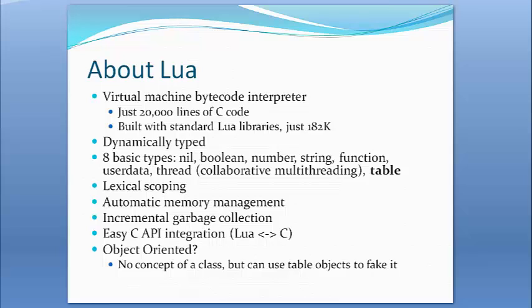Lua is a virtual machine bytecode interpreter with just 20,000 lines of code, and when built with the Lua standard libraries it compiles to a footprint of just 182K — very small. Lua is dynamically typed, as most scripting languages are, with eight basic types including a thread type for supporting collaborative multi-threading. It also features lexical scoping, automatic memory management, incremental garbage collection, and a very simple C API that makes it easy to call Lua from within C and to call C programs from within Lua.